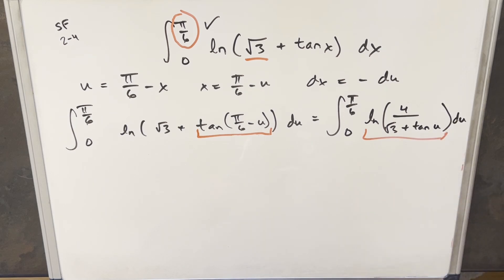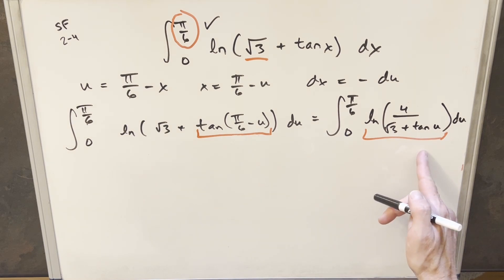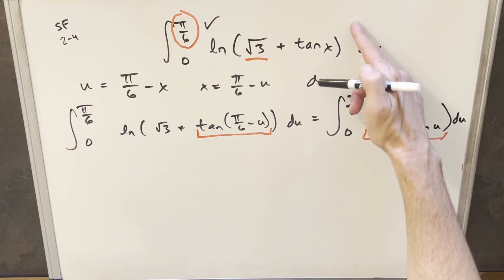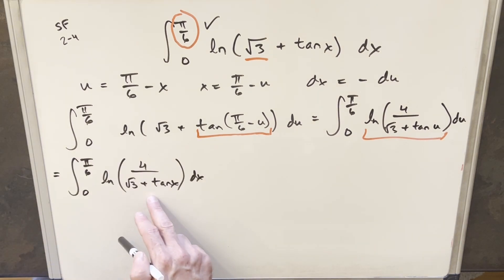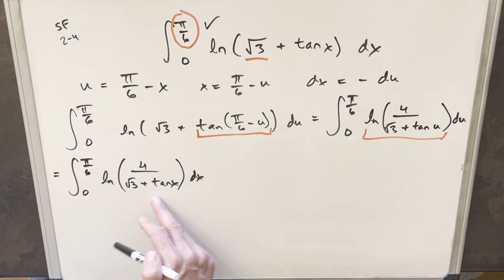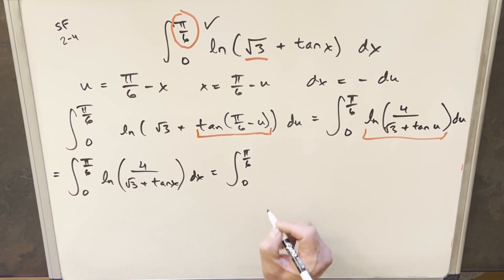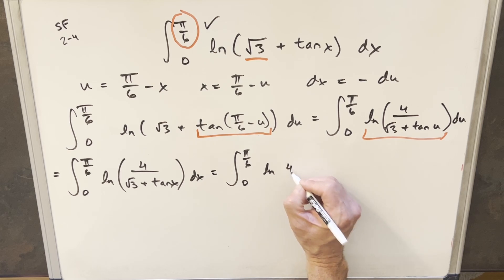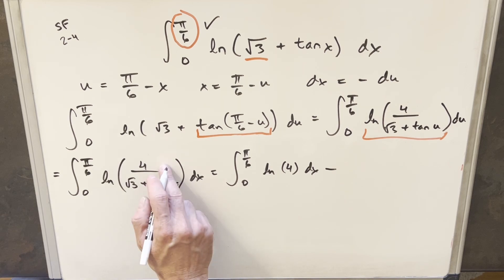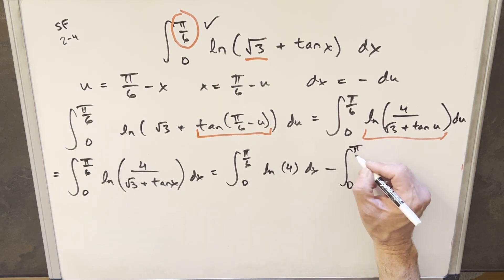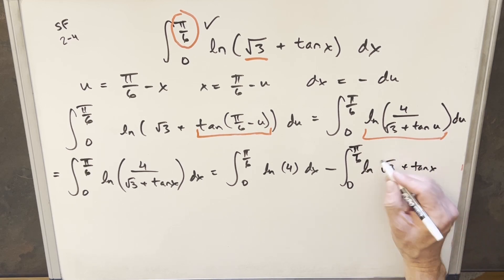Now that we've updated our natural log expression, I'll do a variable change back to x — since it's a definite integral, we can rename the variable without issue — so we can compare to the original integral. Using log properties, I can write this as ln(4) minus ln(square root of three plus tan x). Breaking that into two integrals, the first is the integral from zero to pi over six of ln(4) dx, and the second, which we subtract, is the integral from zero to pi over six of ln(square root of three plus tan x) dx.